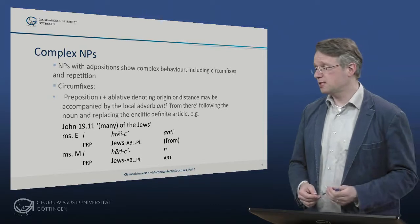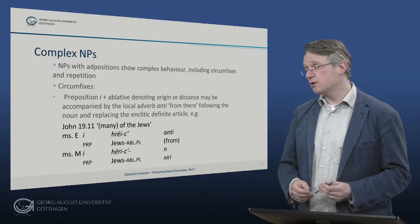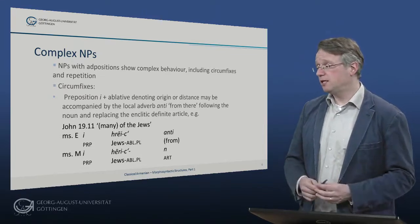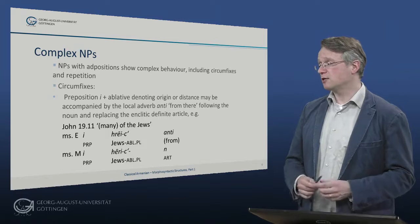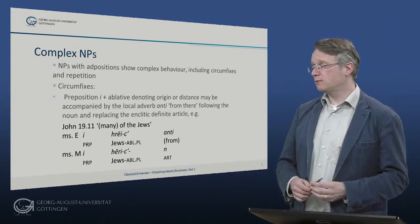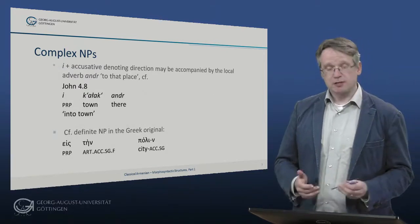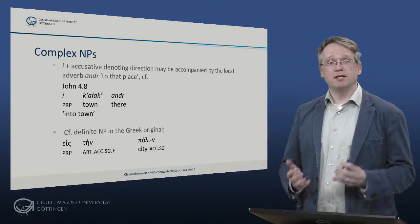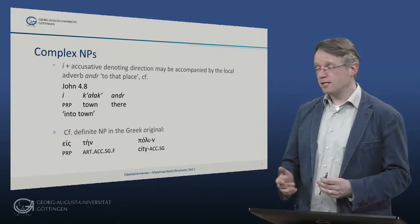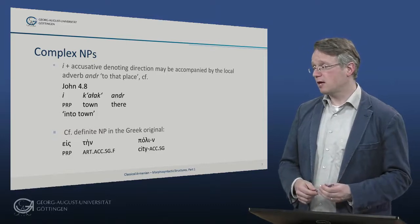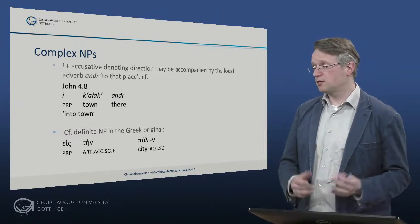So for example, as you can see here on the slide from John 19:11, we have one manuscript where we have e hireits antiv — so 'from the Jews' — and in manuscript m we have e hiritsen, so in the position where we have antiv in the one manuscript, we have the definite article in the other. I plus accusative may also denote direction and then be accompanied by the local adverb under, meaning 'to that place'. So we have e karak under — to town in this case — so karak is town, and we have e the preposition and under there, and they seem to work together to mark this directional meaning.